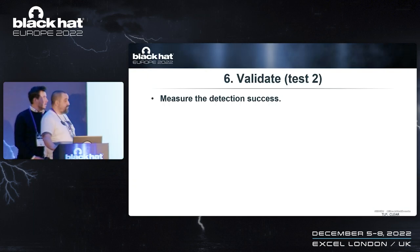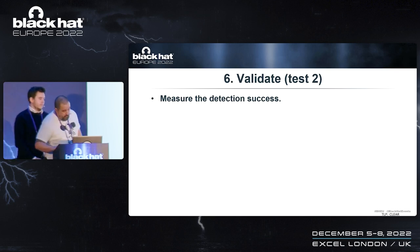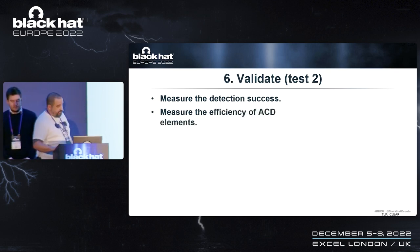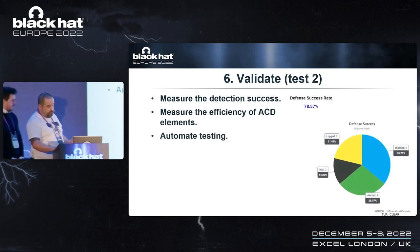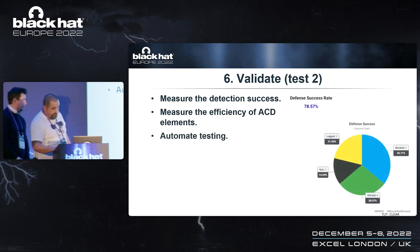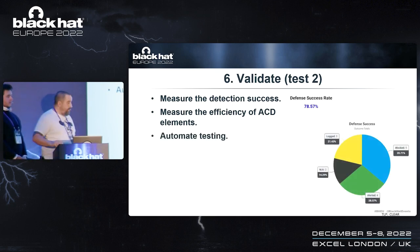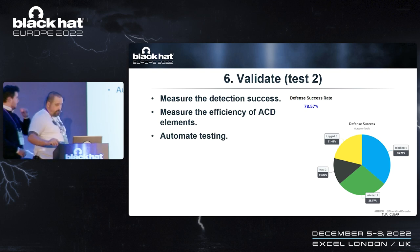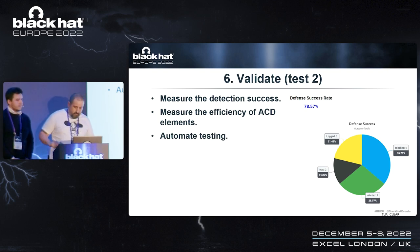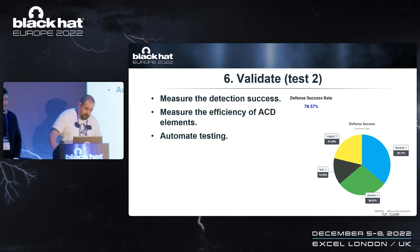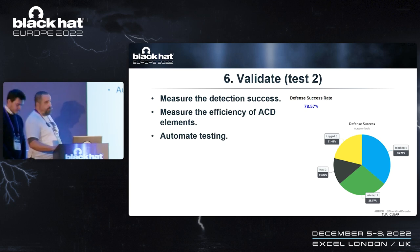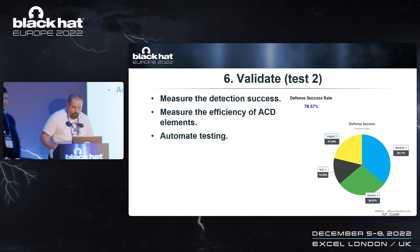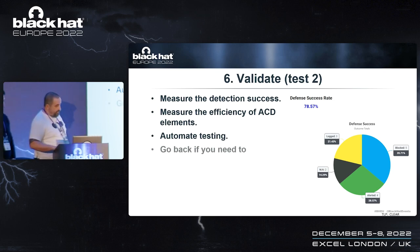We are at step six — validate. This is the last step of our loop: actual validation of all the hard work we've done. We measure the detection success and efficiency of our ACD elements. We came from a very bad result to partial awesomeness — a 78.57% defense success rate. That may be good for some, but whoever wants more can go back to step four.